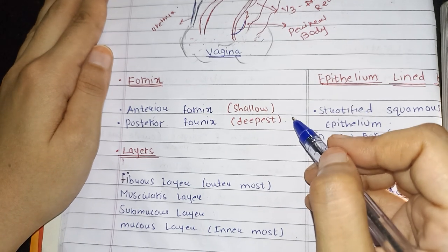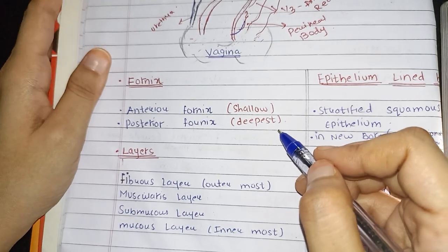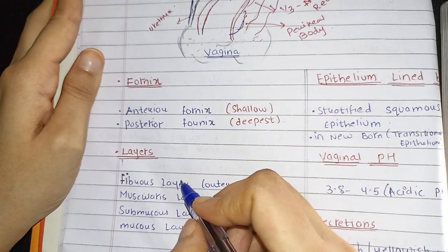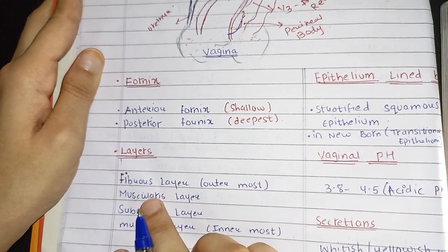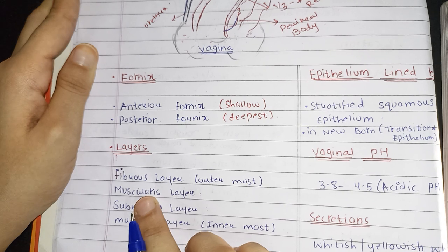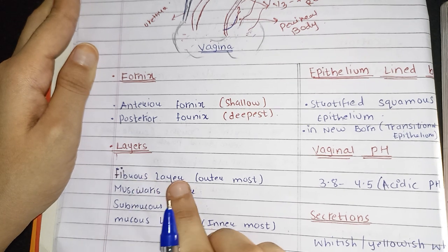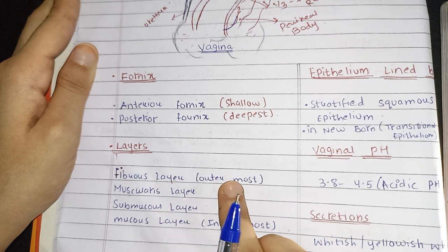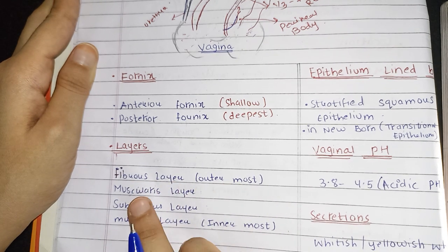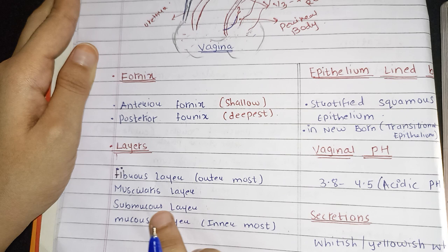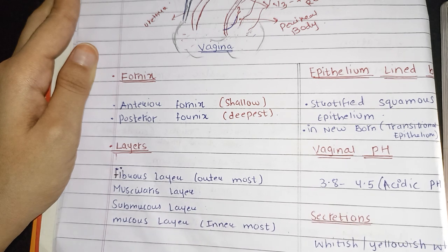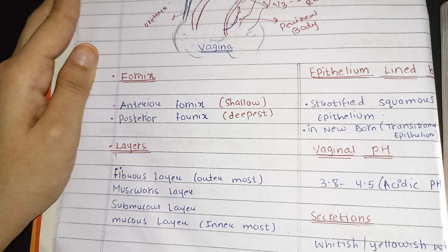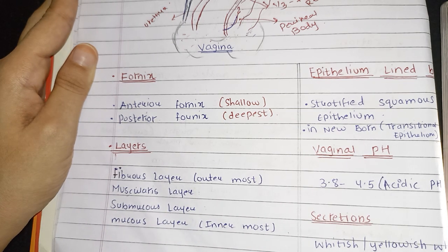Now let's see the layers of the vagina. There are four layers in vagina: the fibrous layer, which is the outermost layer; then the muscularis layer; then the submucus layer; and then the mucous layer, which is the most inner one.